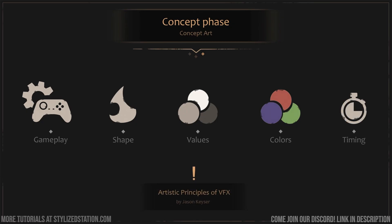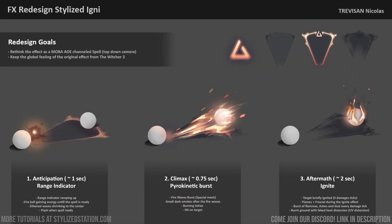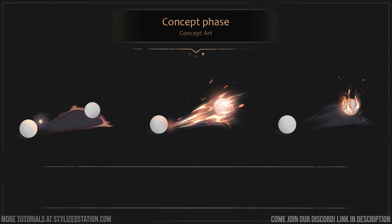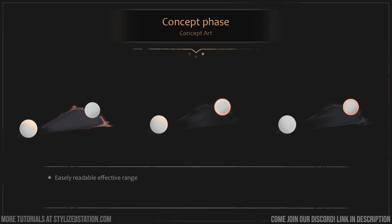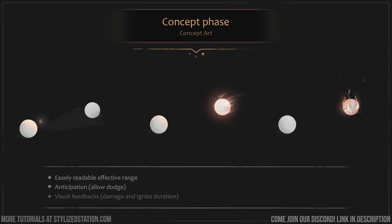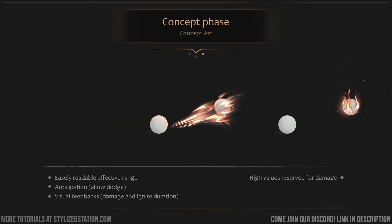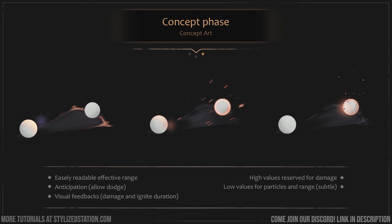I highly recommend watching the Artistic Principles of VFX video series by Jason Keyser — he helped me a lot to conceptualize VFX while thinking of all those key elements. Here's the final concept art with a lot of personal notes. I wanted an easily readable effective range with some anticipation to allow players to dodge the spell if they were reactive enough, some visual feedback when players take damage and are under the ignite effect, and from an artistic standpoint, I reserved high values for damage and lower values for particles and range. I also used a lot of dark color to have better contrast.